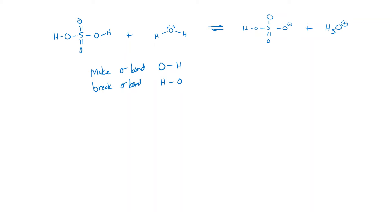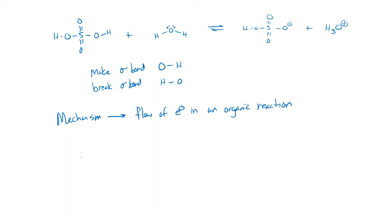When we draw a mechanism — which shows the flow of electrons in a chemical reaction — we always, every time, with no exceptions, start at the base. Find your base; that's where you start. Your base is almost always going to have lone pairs or a pi bond that will act as the electron donor.